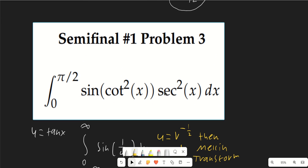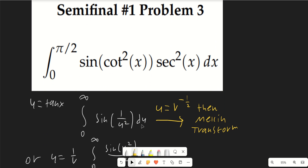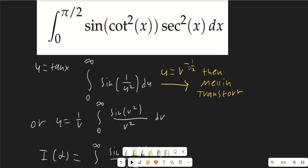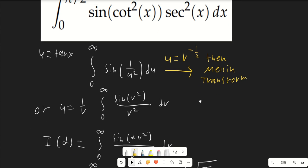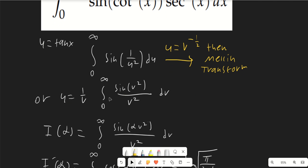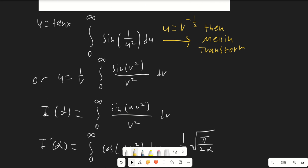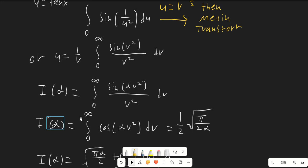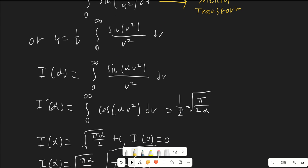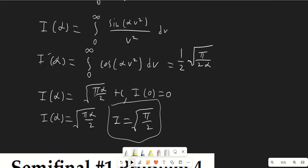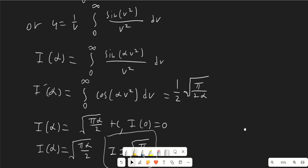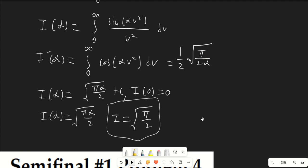Problem three requires substituting u = tan x, giving ∫sin(1/u²) du. The fastest method is to substitute u = v^(−1/2) and apply the Mellin transform of sine. If you're not familiar with the Mellin transform, substitute u = 1/v instead to get sin(v²)/v², then use Feynman's trick with a parameter α in the numerator. Differentiating with respect to α gives cos(αv²), equal to (1/2)√(π/2α). Integrating and using i(0) = 0 to set c = 0, then setting α = 1 gives the answer √(π/2).